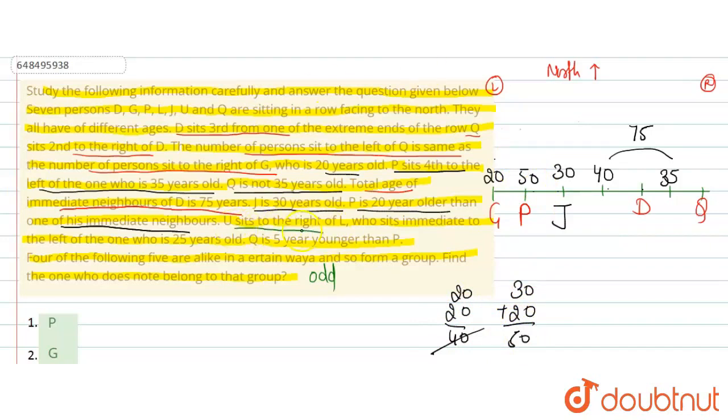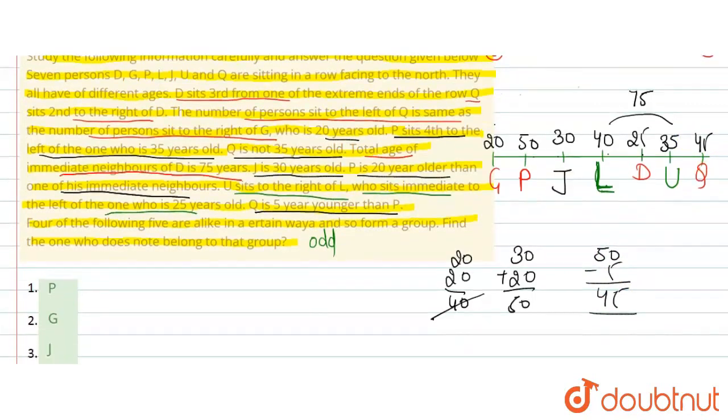Then given, U sits to the right of L. So here comes L, and to L's right is U. Then given, L is immediate left of one who is 25 years old. That means D becomes 25 years old. Q is 5 years younger than P. That means 50 minus 5 is 45. So Q's age is 45.